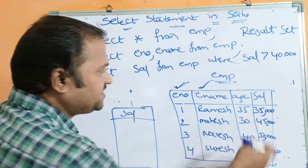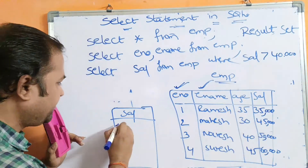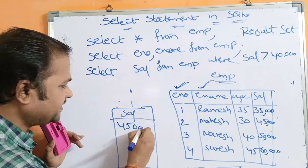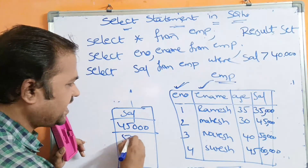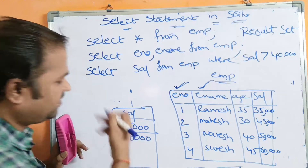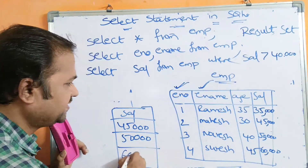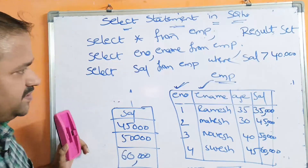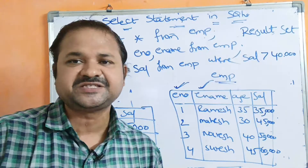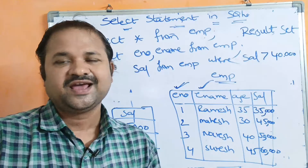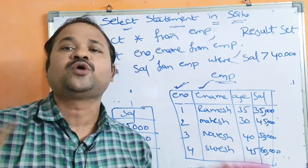Looking at the data: the first row has a salary of 35,000, which is less than 40,000, so it won't be displayed. The second row salary is greater than 40,000, the third row salary is also greater than 40,000, and the fourth row salary is greater than 60,000. By using WHERE we can specify the condition to filter column data or row data.